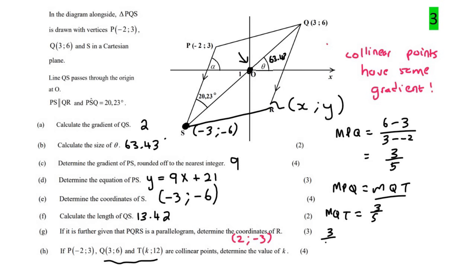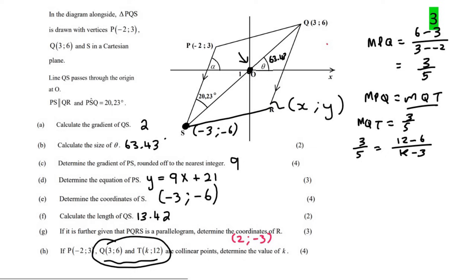So I'm just going to use this one, so we can say that the gradient of QT must also be 3 over 5. So we can say 3 over 5 is equal to, now I'm going to use the gradient formula between these two coordinates, and so I could say 12 minus 6 over K minus 3. And so what I would do is just simplify a little bit, so 3 over 5 is equal to 6 over K minus 3, and then I would do cross multiplication. So this would go up there, and this would go there, so that's going to give you 3 bracket K minus 3 equals to 6 multiplied by 5. And so that would be 3K minus 9 equals to 30, and so 3K would be 39, and so if you divide by 3, K would be equal to 13.